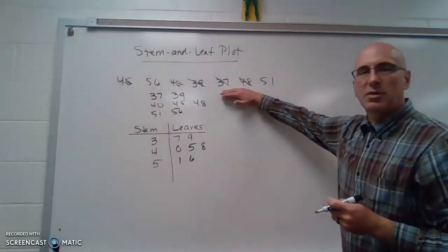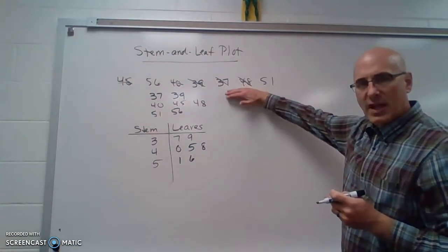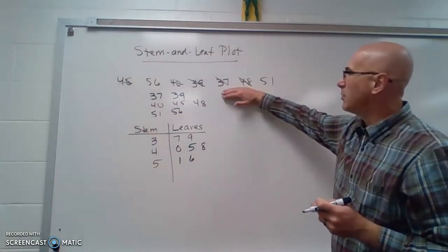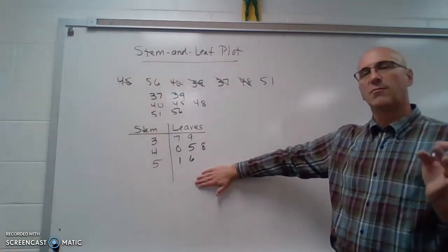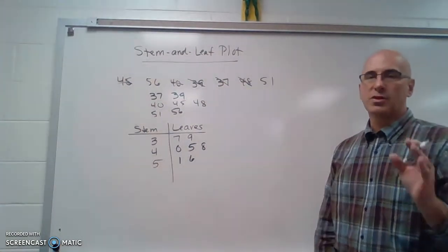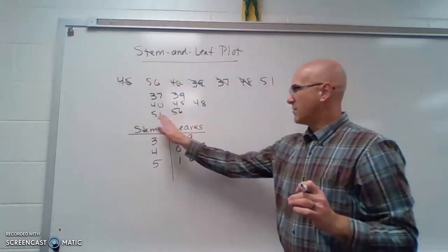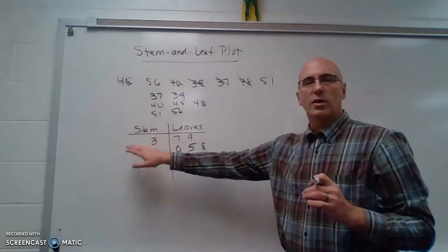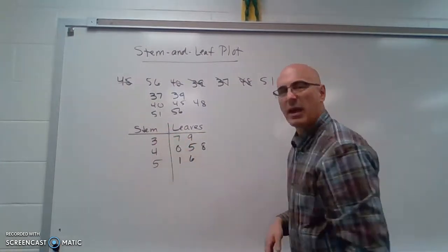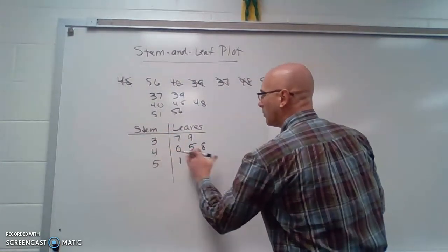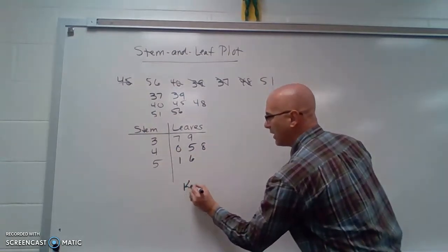So depending upon how big your data set is, you might be able to just go right from your original data set to your stem and leaf plot. Then it's really important to put a key. We have to tell your viewers what this means. So we usually just pick one of these numbers here. We could say we put a key,